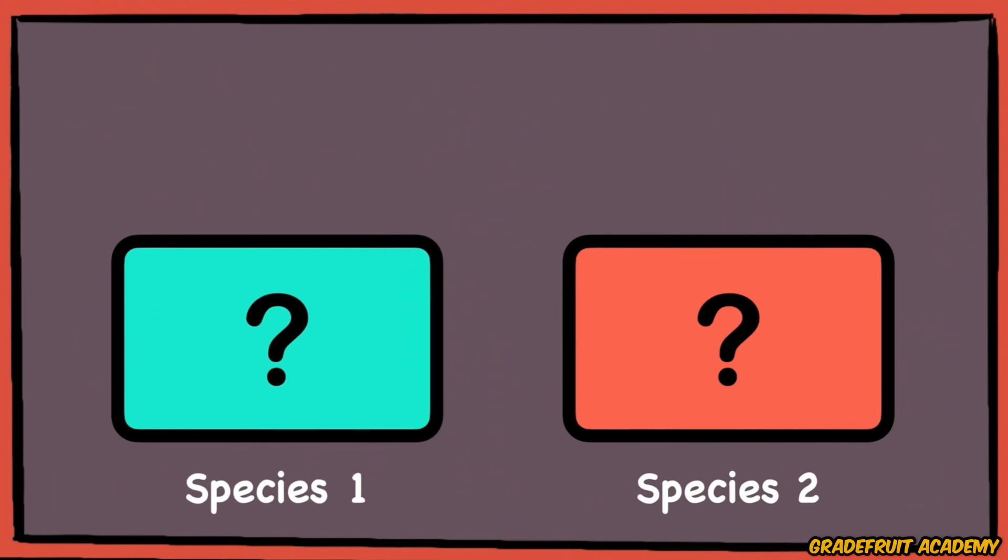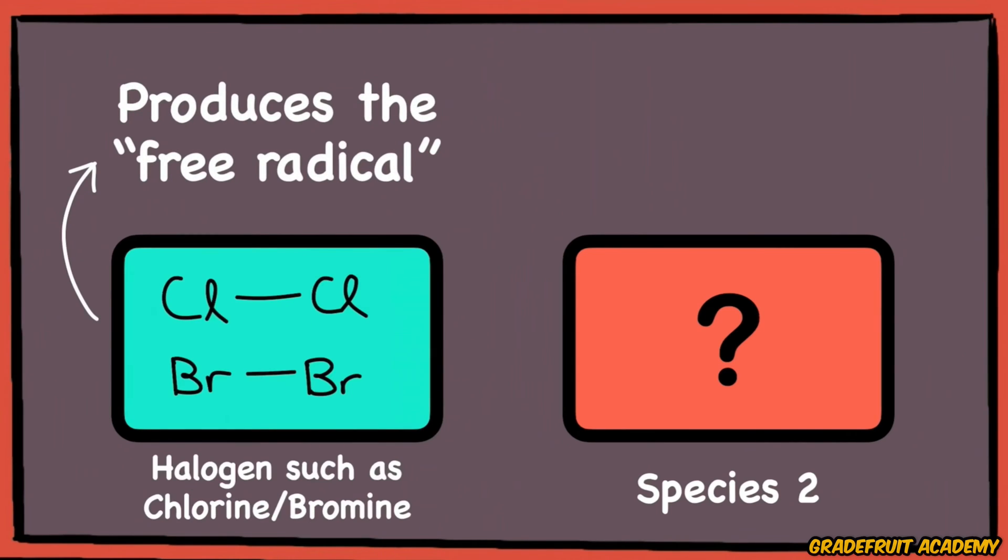One of the species involved needs to produce the free radical, which is typically a group 17 halogen molecule such as chlorine. And if you've been paying attention, the other species needs to be an alkane.